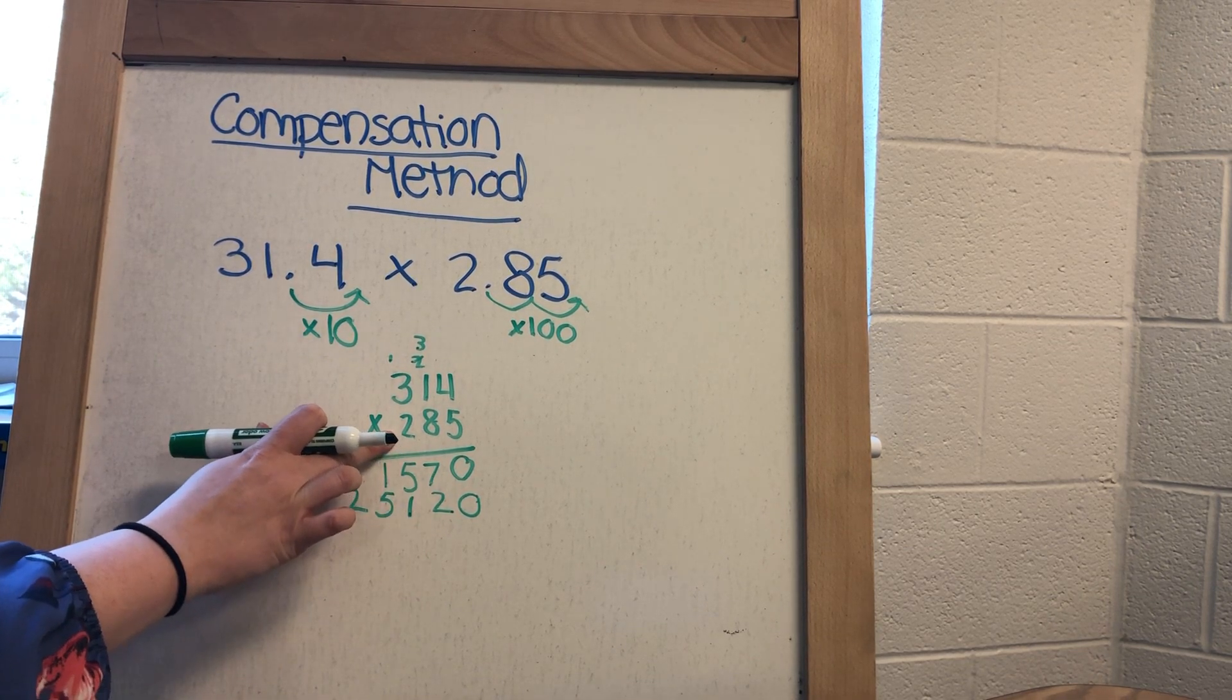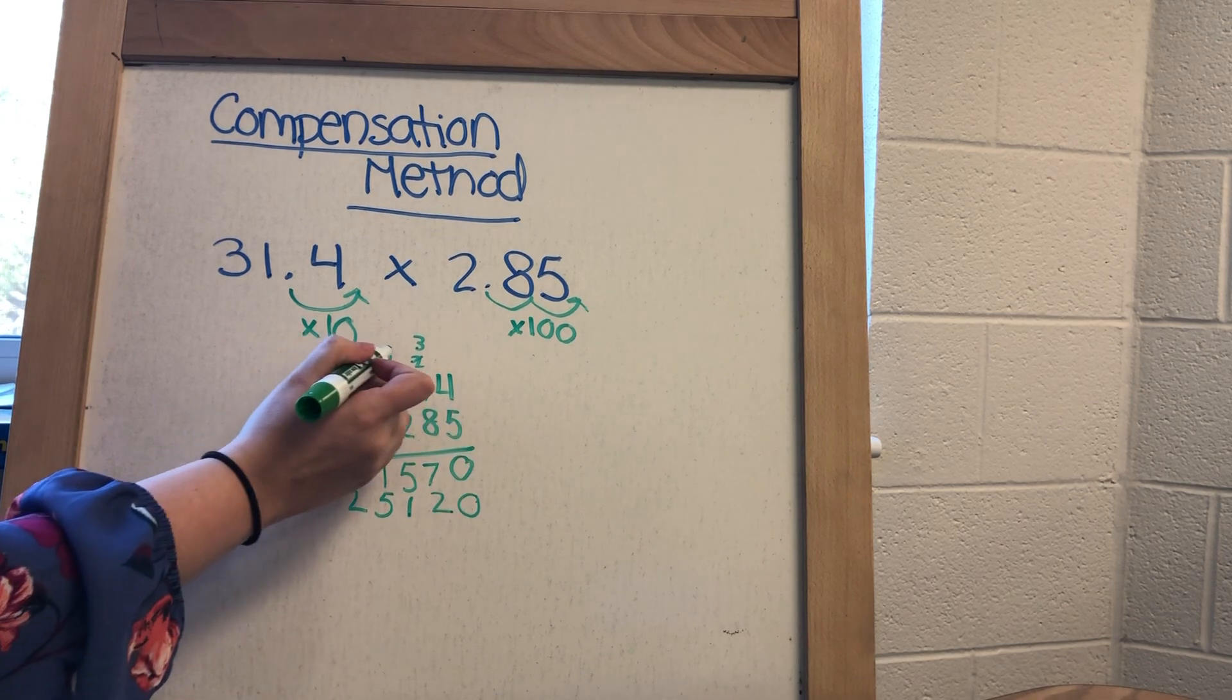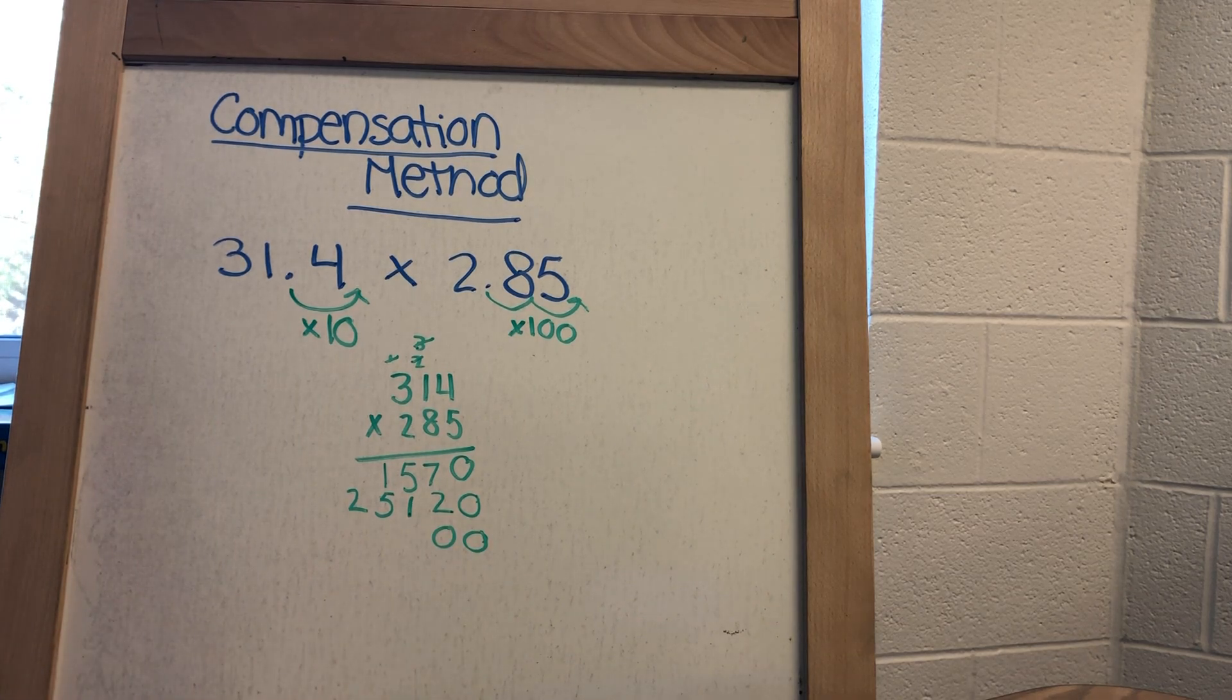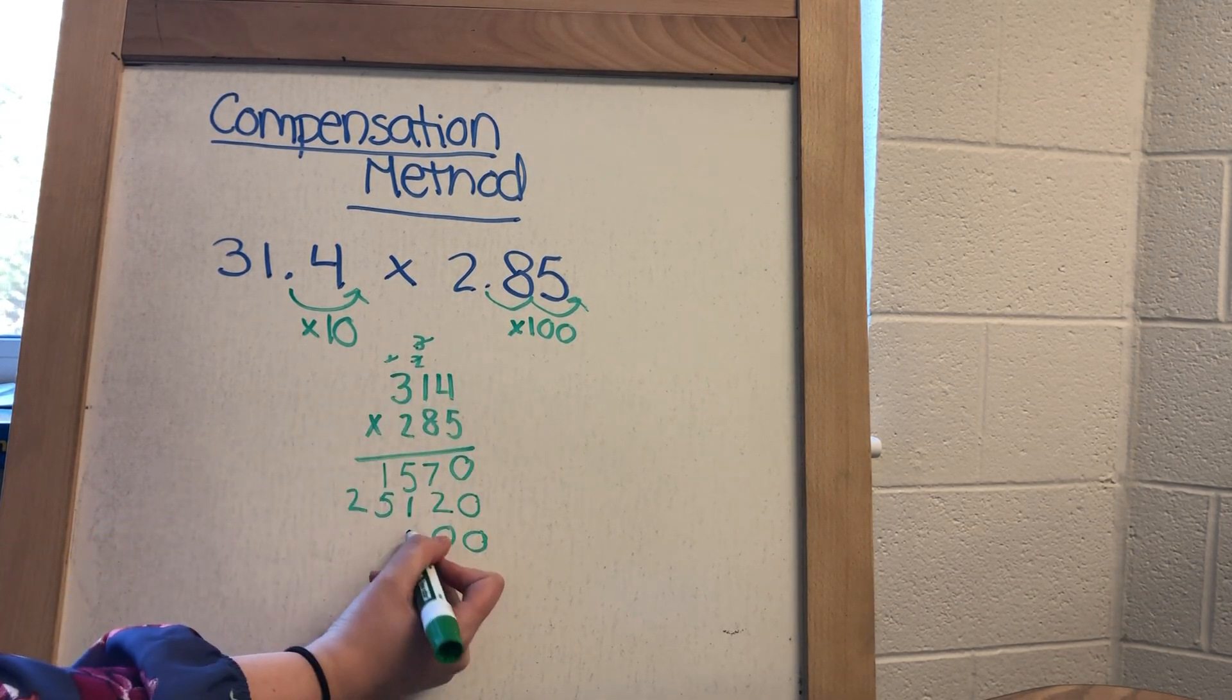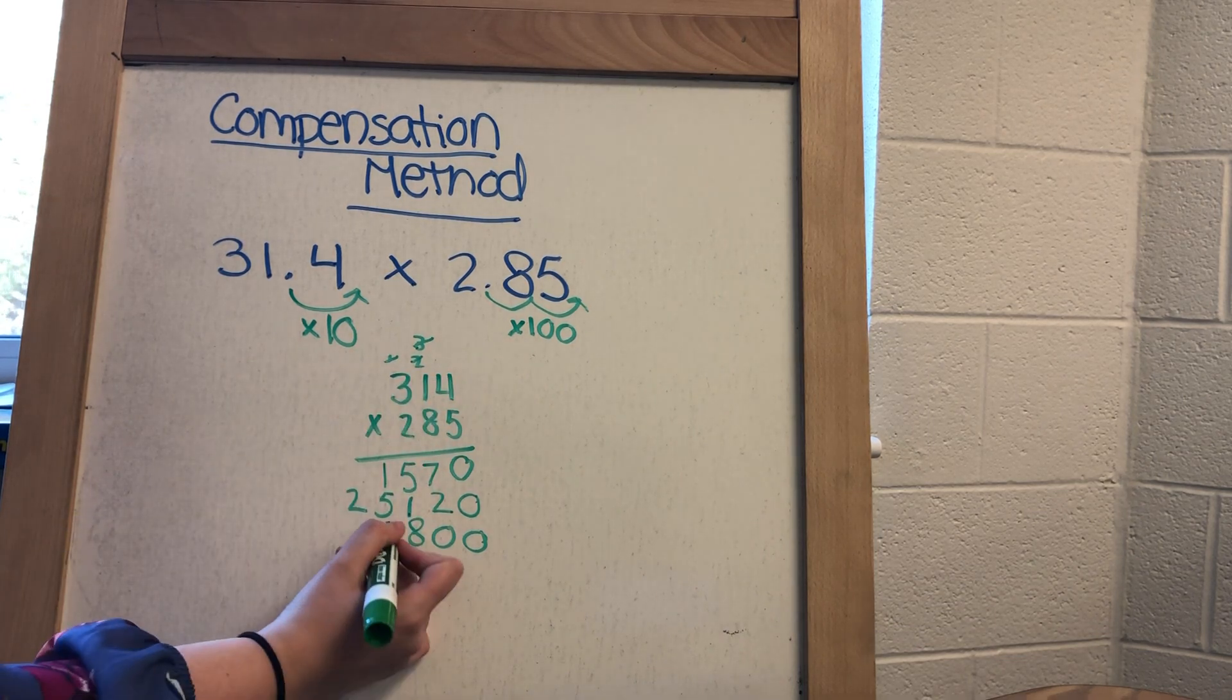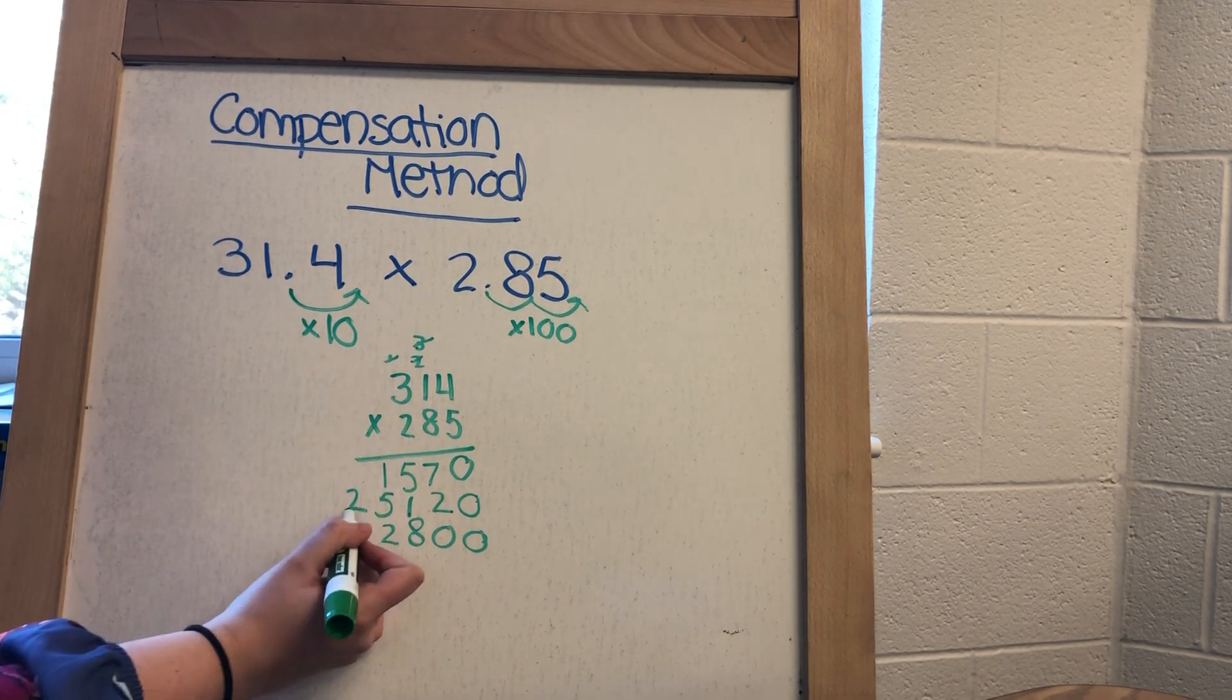Because I'm going into my third digit now, I'm in the hundreds place, I need to have two placeholders. 2 times 4 is 8, 2 times 1 is 2, 2 times 3 is 6.